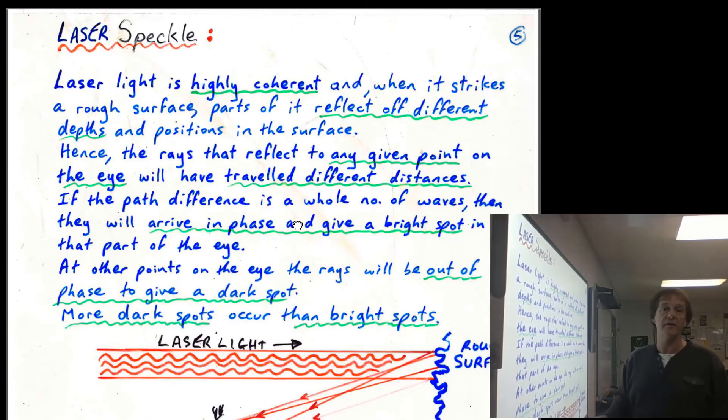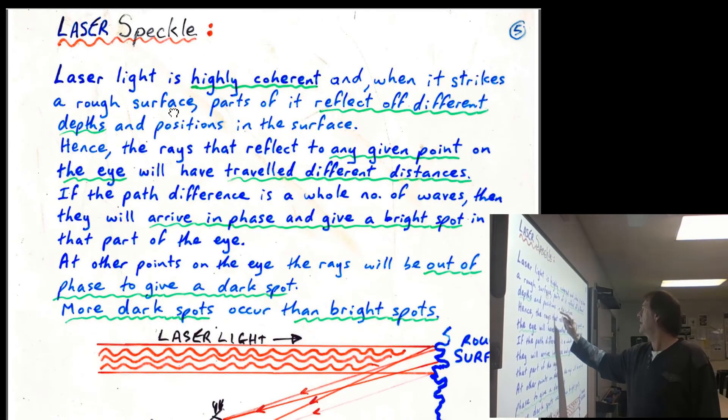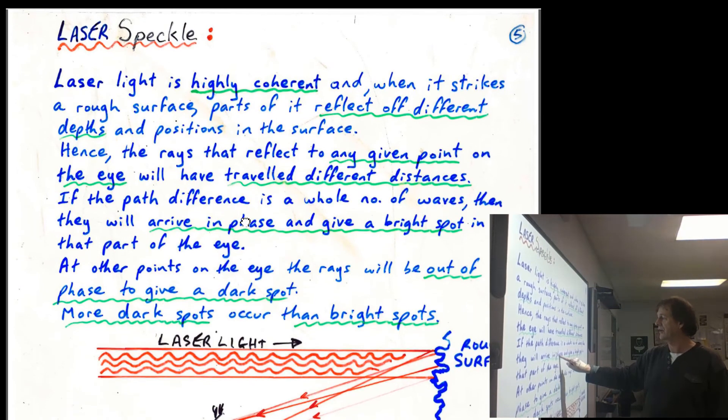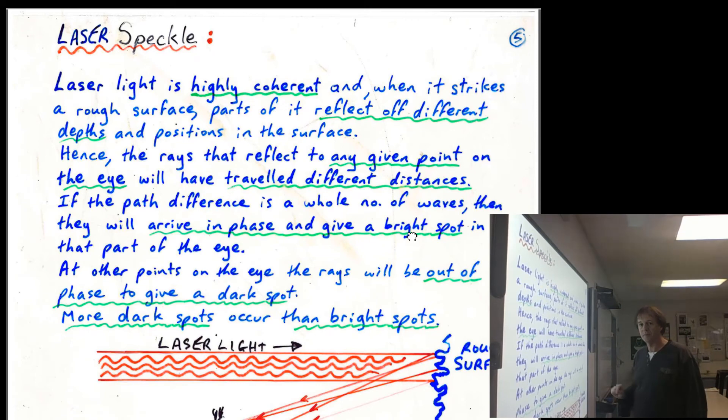So the key thing to be aware of is that the laser light is highly coherent. When it reflects off a rough surface, it's going to travel different distances because of the different depths in the surface, and because of that, you're going to get a path difference for any one position in the eye from all the different reflections. If that path difference is a whole number of wavelengths, it's going to arrive in phase, give you a nice bright spot.